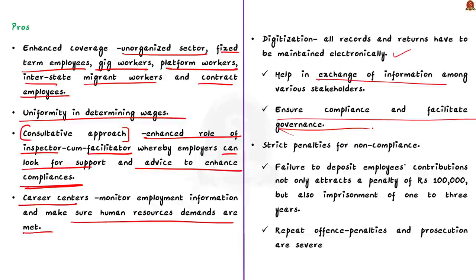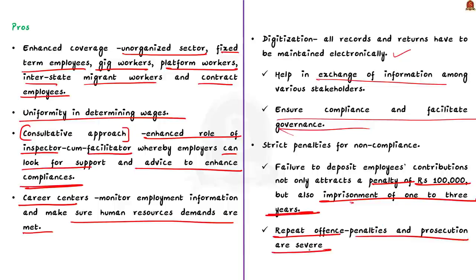The code also imposes strict penalties for non-compliance. The strength of implementing legislation lies in the ease of compliance as well as in the penalties that deter non-compliance. Any failure to deposit employees' contribution not only attracts a penalty of 1 lakh rupees but also imprisonment of 1 to 3 years. In case of repeated offense, the penalties and prosecutions are severe.